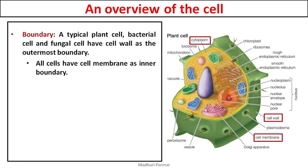In plants, the cell wall is made up of mostly cellulose. In bacteria, the cell wall is made up of peptidoglycan. And in fungus, the cell wall is made up of chitin. So, even though it is called a cell wall, it is different for different organisms — it differs for plants, bacteria, and fungus.